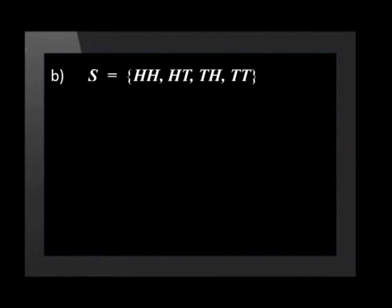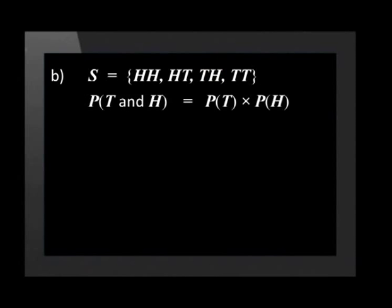It doesn't matter how many times you toss the coin. As long as it is a fair coin, these probabilities will stay the same. From the sample space, we see that of the four outcomes, only one is successful. The events tail on the first toss and head on the second toss are independent, so the probability of getting a tail followed by a head equals the probability of tails times the probability of heads — one half times one half — giving us one quarter, or 25%.